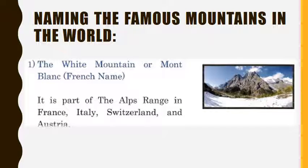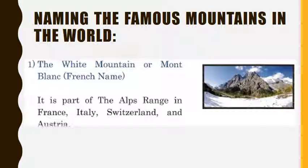Naming the famous mountains in the world. Number 1: The White Mountain, or Mont Blanc, is a French name. It is a part of the Alps Range in France, Italy, Switzerland and Austria.